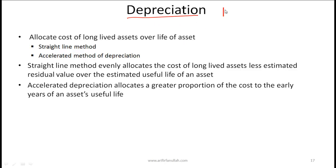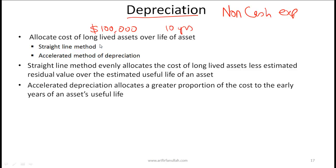Depreciation is a non-cash expense. With depreciation, we allocate the cost of a long-lived asset over its useful life. For example, if you buy a long-lived asset for $100,000 with a 10-year life and a $0 salvage value, using the straight-line depreciation method you depreciate the same amount every year — $10,000 per year — so at the end of 10 years the book value is down to zero.